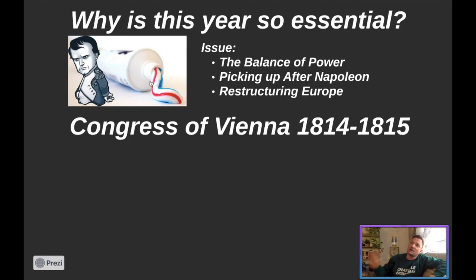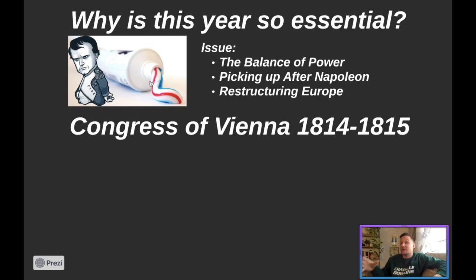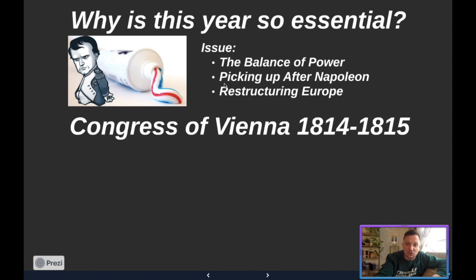Some of you are probably like, but why is it starting in 1814 if 1815 is when Napoleon got exiled? Well, the Congress of Vienna — the meeting started after he was exiled the first time. When he ends up in Elba, the Congress of Vienna meets for the very first time to try and figure out the answers to all of these issues.